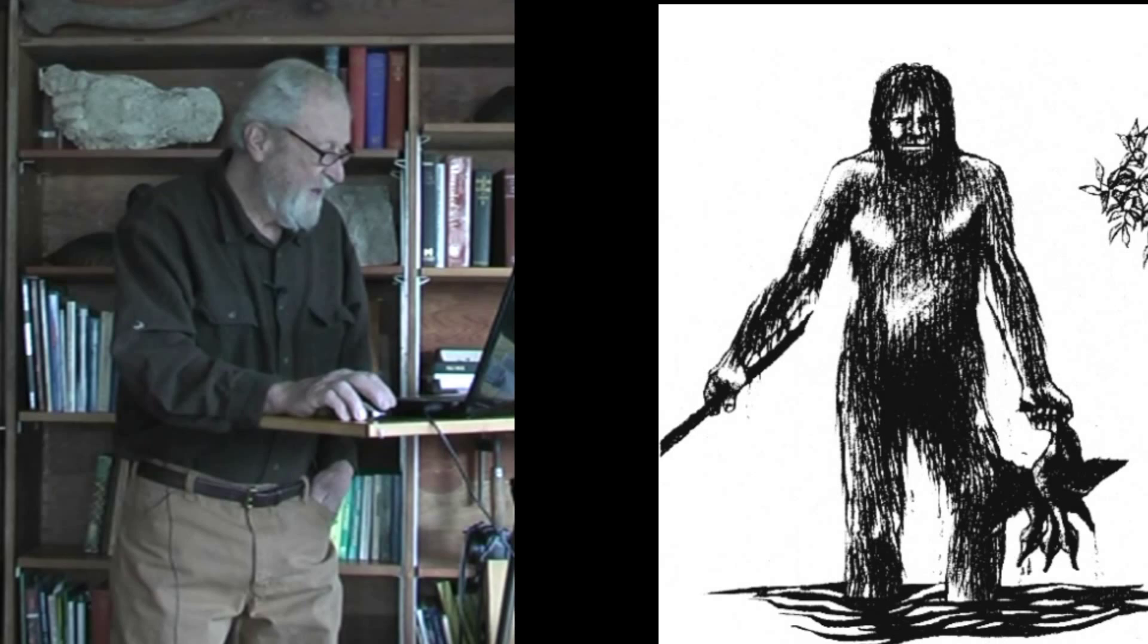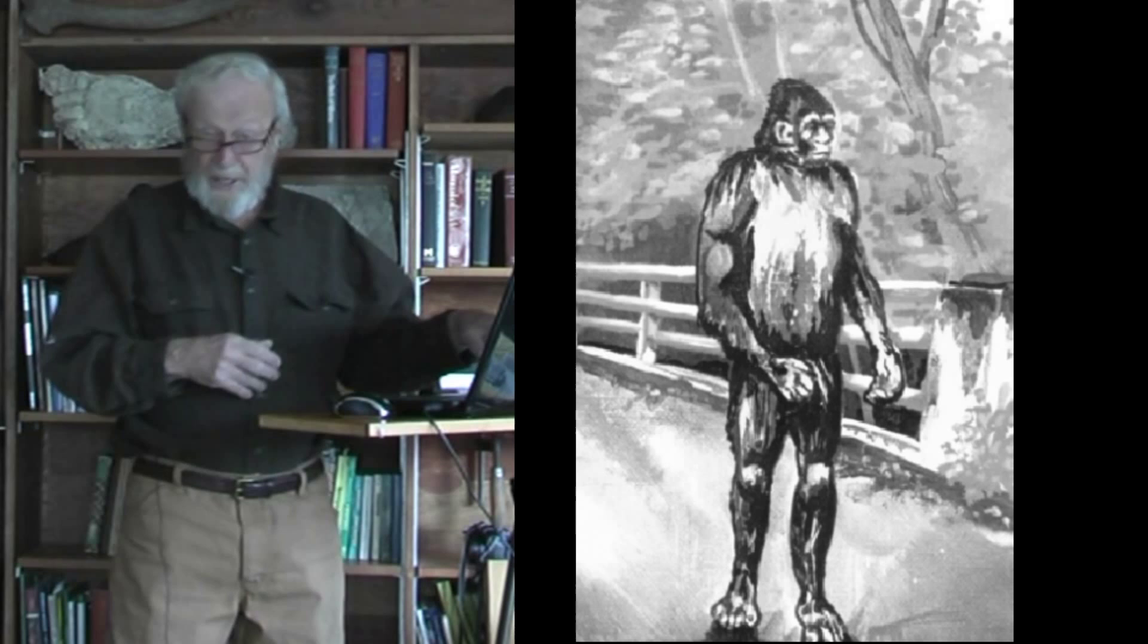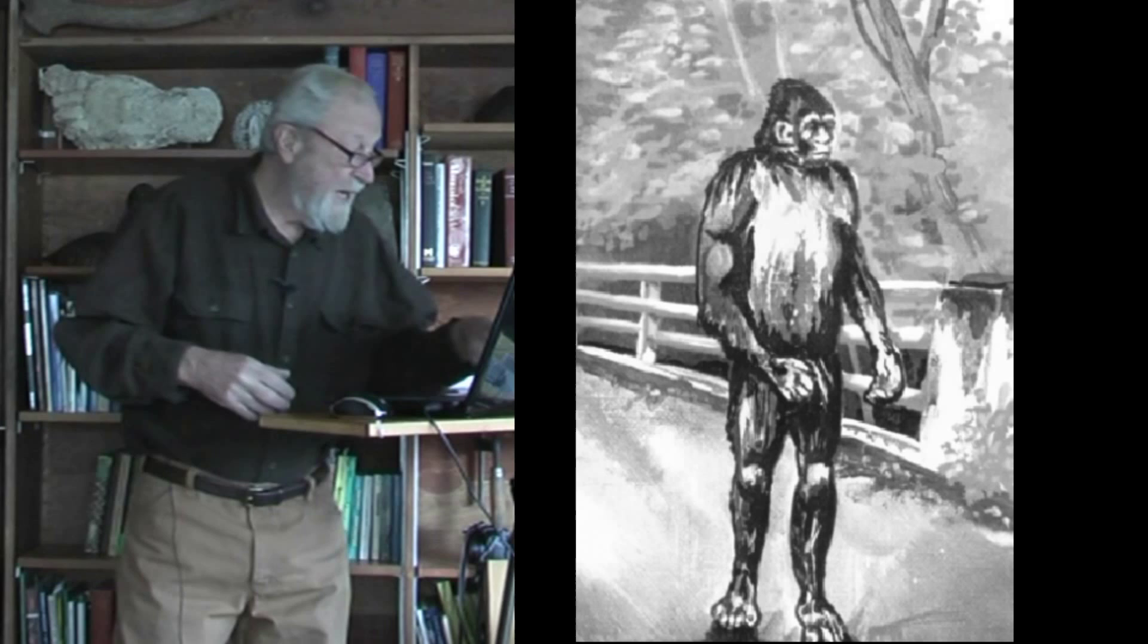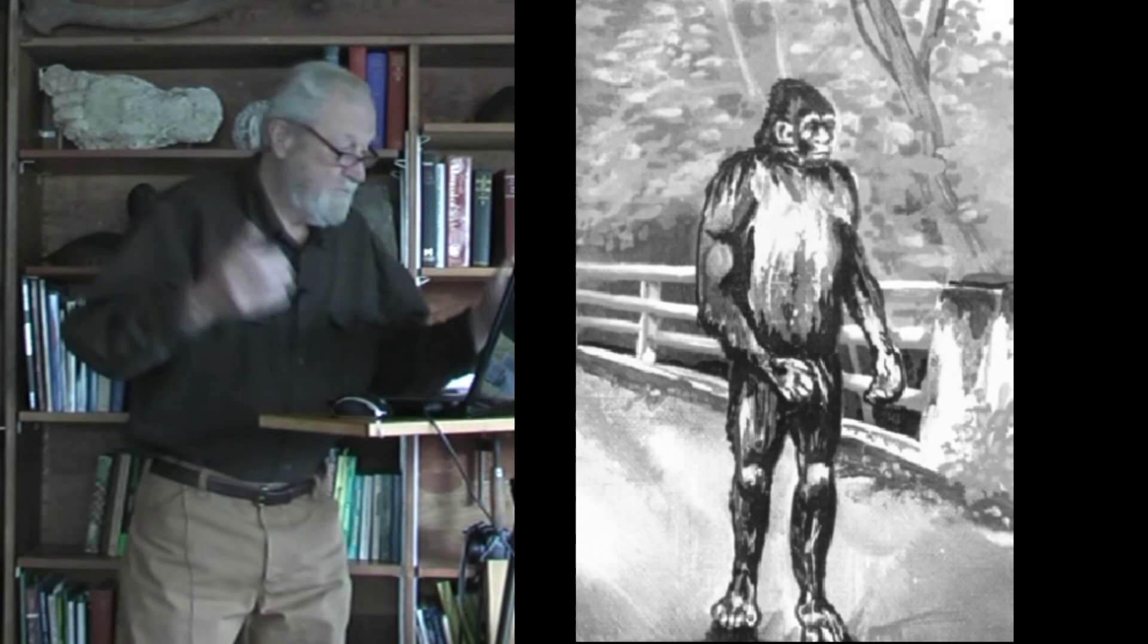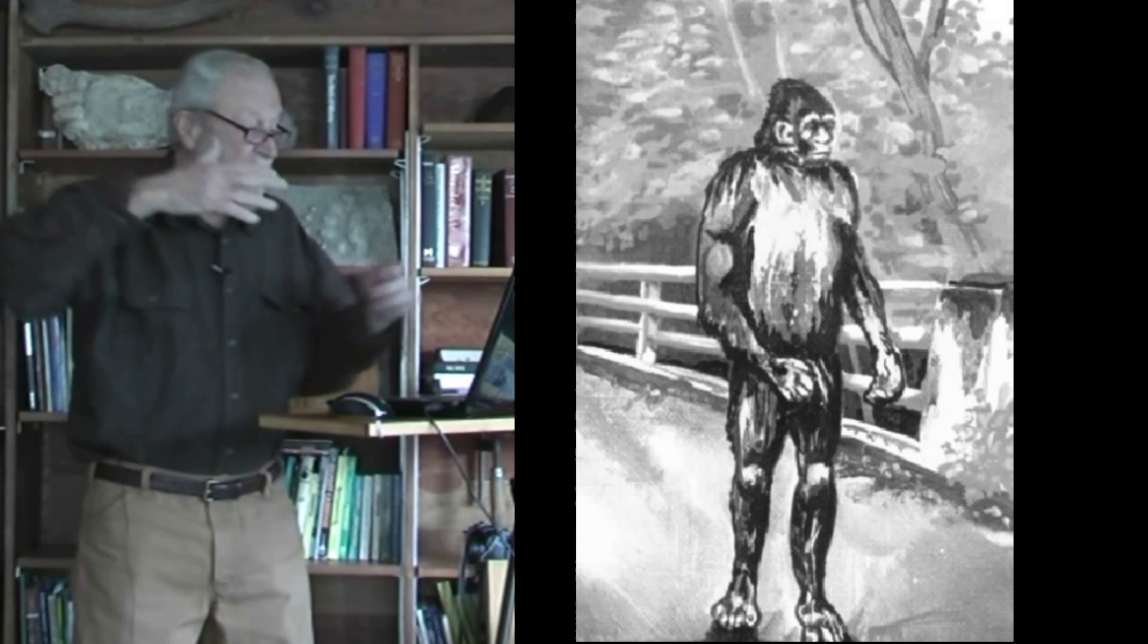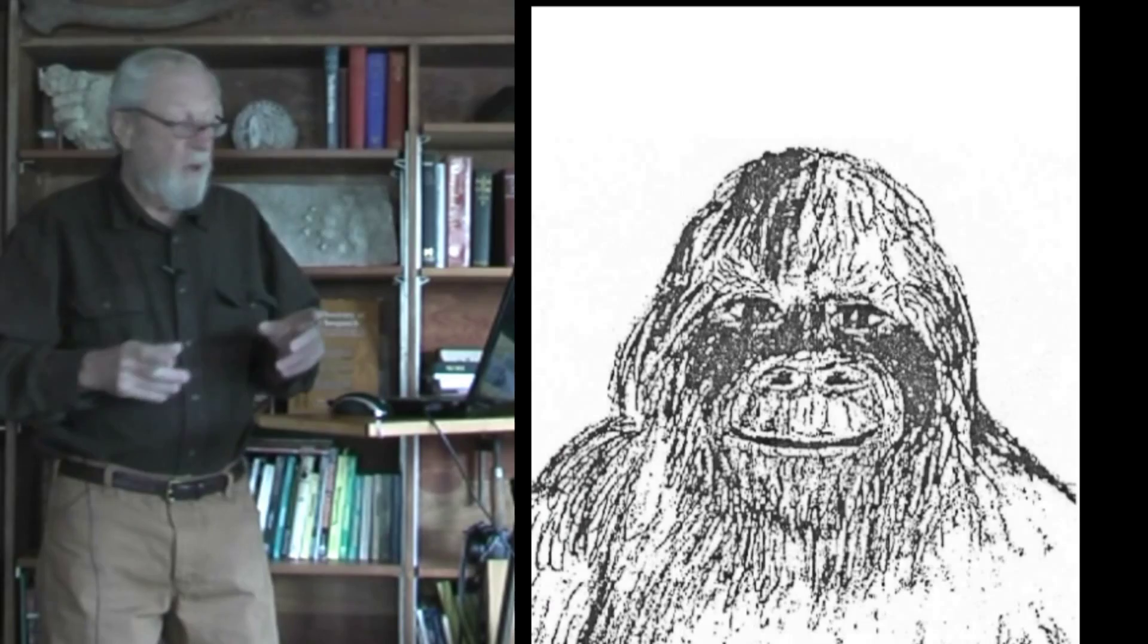One more of these would appear to be sub-adults, or young adults. This one, again, from Ohio. And this is actually a painting, Ohio, 1982, a Sasquatch standing on a bridge. The usual characteristics, the short neck, the tendency towards the pointed head, in this case, sloping from receding forehead, and large hands, as well as large feet.